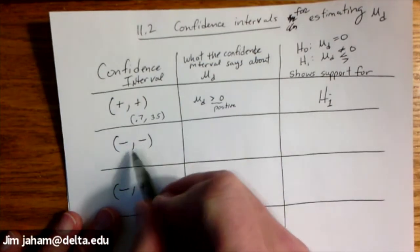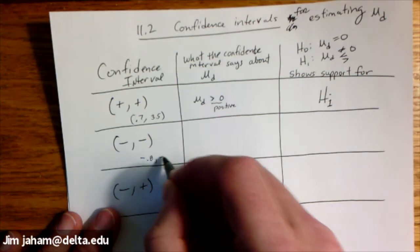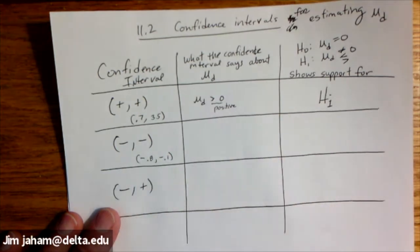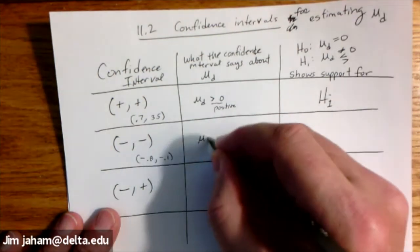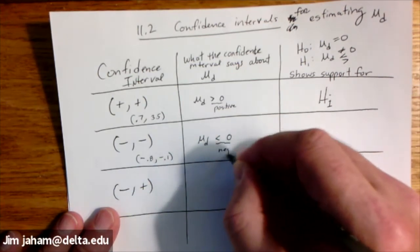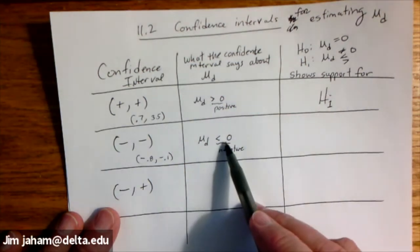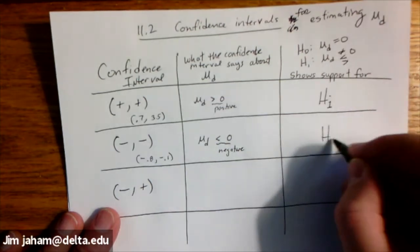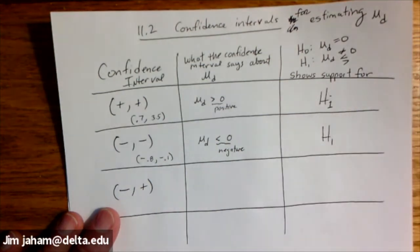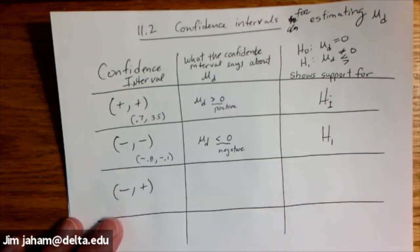If you happen to find an interval that's negative-negative, the second case, like negative 0.8 to negative 0.1, it doesn't matter the size of those numbers, just that they're both negative. Then that gives evidence to support that the mean of the differences is less than zero, and that means negative. Well, mu sub d is less than zero. The only place that's going to appear is also in the alternative hypothesis. So a confidence interval that's negative-negative will give us support for H1.